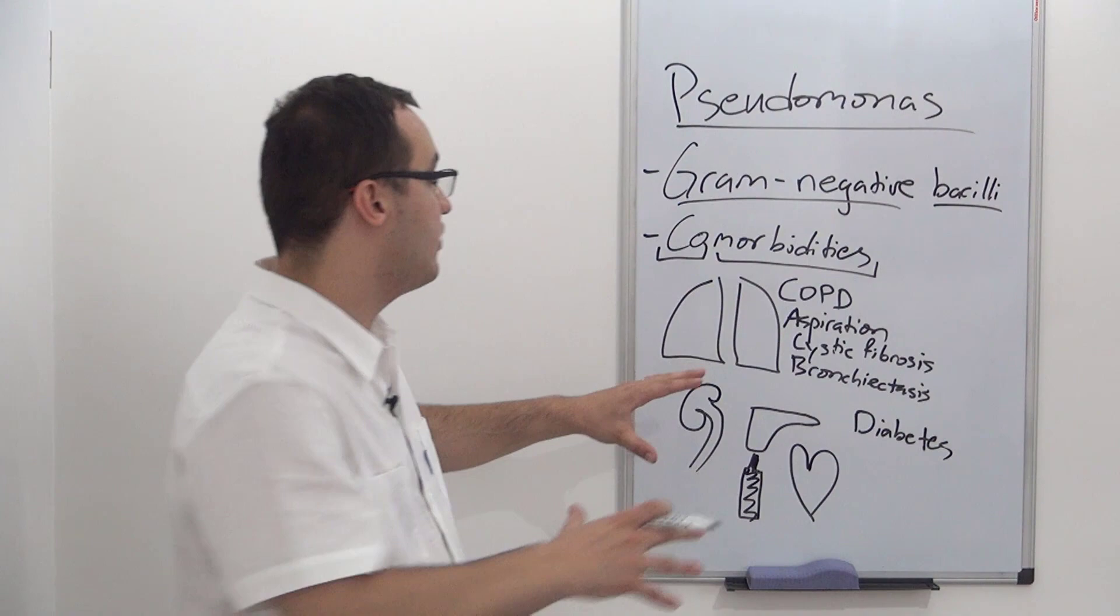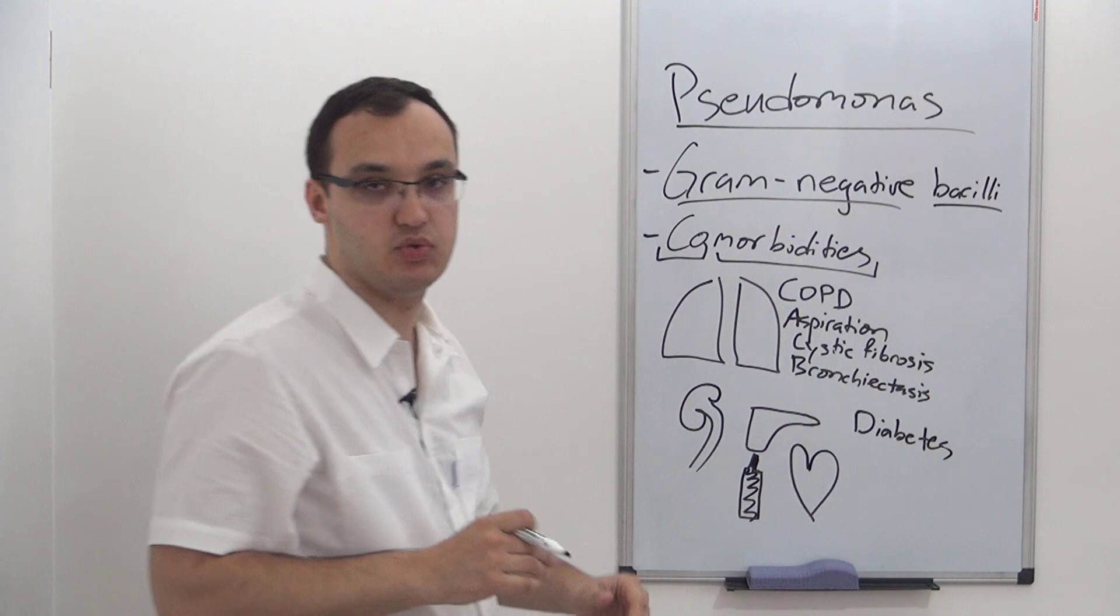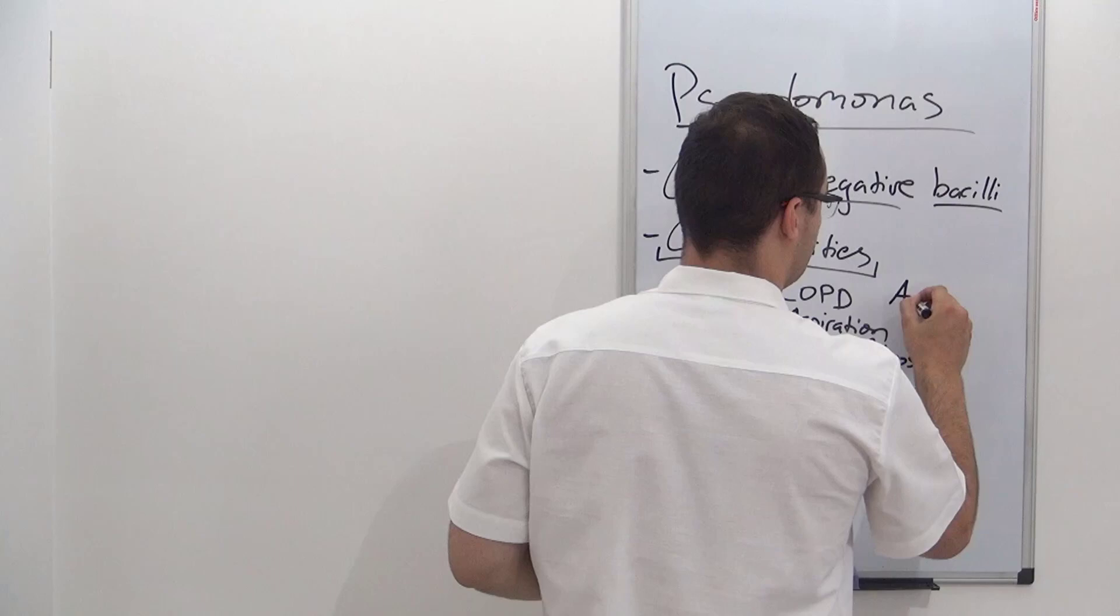So this patient has comorbidities. We have COPD, lung disease, aspiration, cystic fibrosis, and so on. When we have any of these, then we have risk factors for pseudomonas. And that means that these patients should be treated accordingly. So they should be treated against pseudomonas.